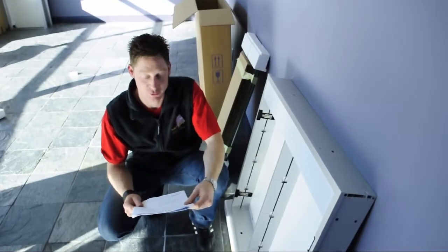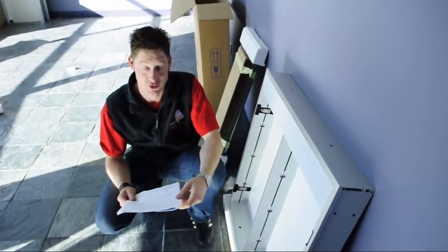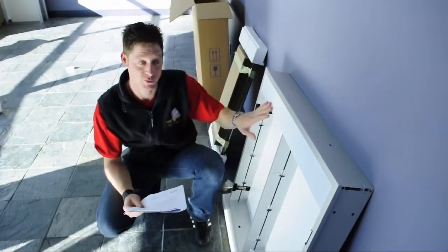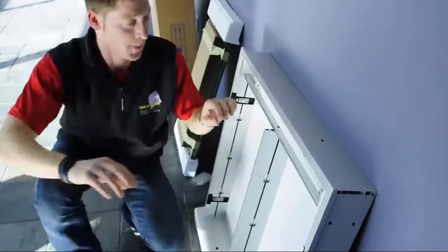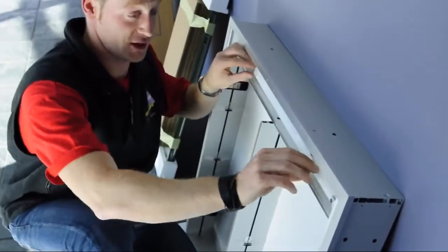Step two is we have to remove the electrical cover which also means we have to remove the light cover here. Then we remove the fluorescent tubes.